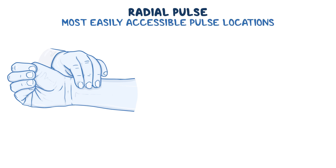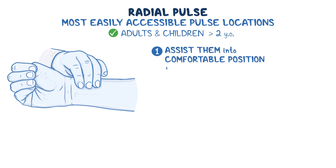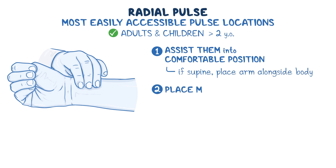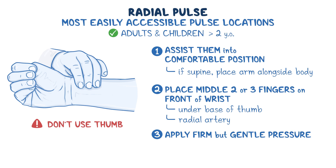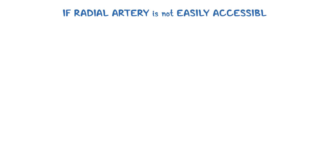The radial pulse is one of the most easily accessible locations and is satisfactory for adults and children over two years of age. Assist the patient into a comfortable position. If supine, place their arm alongside their body. Place your middle two or three fingers on the front of the wrist just under the base of the thumb where you'll feel the radial artery. Do not use your thumb, as you may confuse it with your own pulse. Apply firm but gentle pressure without occluding the artery.